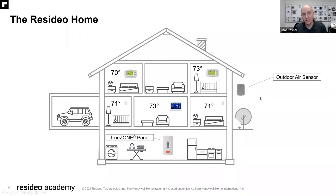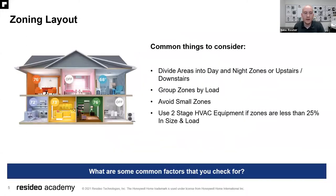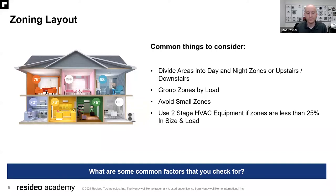Outside the house, we have an outdoor air sensor. For example, if we're using a heat pump and need control for lockouts, we can easily add that in without running any wires. When considering a home to zone out, we want to divide zones into day or night, or upstairs and downstairs, which is very common. We can group zones by load, but we want to make sure to avoid small zones. Use two-stage HVAC equipment if zones are less than 25% in size and load if possible.